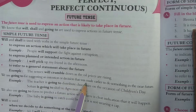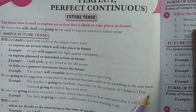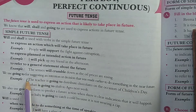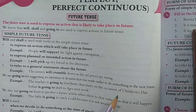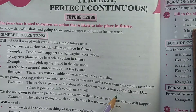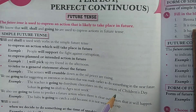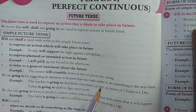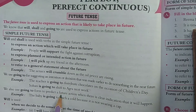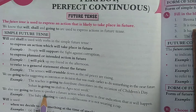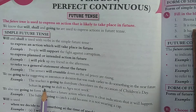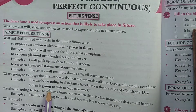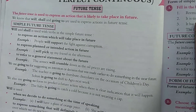We use the 'going to' form for an intention or decision that was made earlier, to do something in the near future. For example: 'The teacher is going to distribute chocolates on the occasion of Children's Day.' It is understood that on Children's Day the teacher will give chocolates. Another example: 'She is going to shift to Agra next week.'